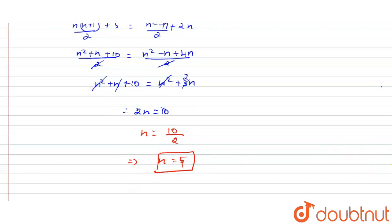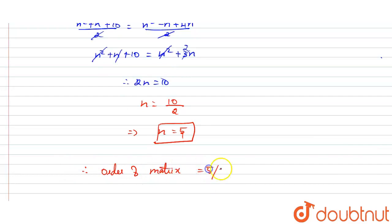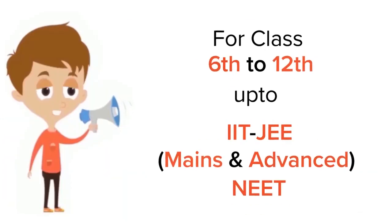Therefore, the order of the matrix for the given condition is 5.